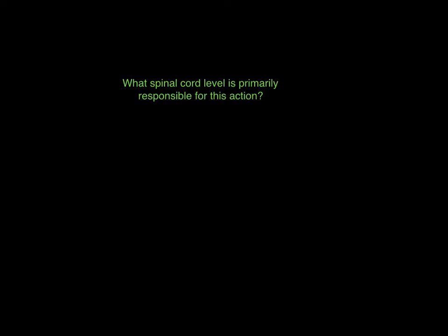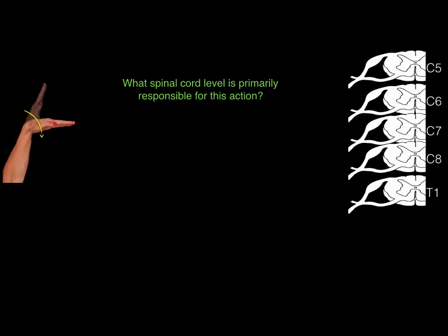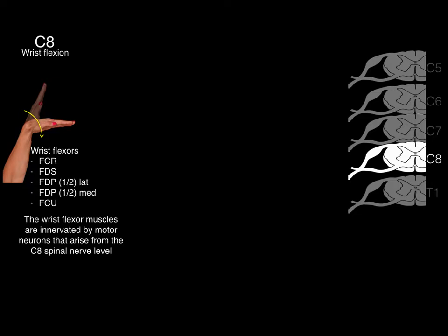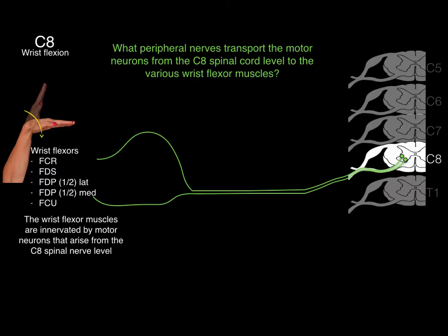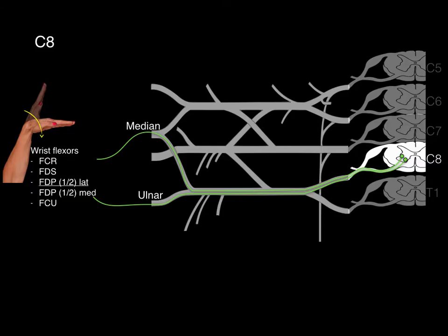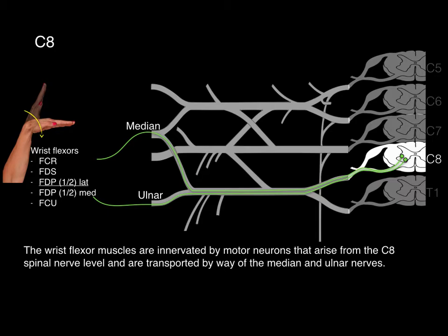Practice question: what spinal cord level is primarily responsible for wrist flexion? The C8 spinal cord level. The wrist flexors include the flexor carpi radialis, flexor digitorum superficialis, flexor digitorum profundus (both halves), and flexor carpi ulnaris — all innervated by motor neurons arising from C8. The peripheral nerves transporting those neurons to the wrist flexors are the median and ulnar nerves.